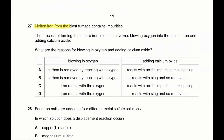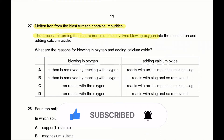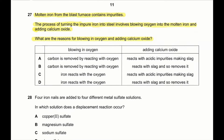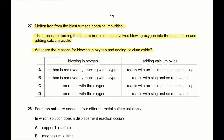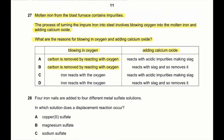Question 27: molten iron from the blast furnace contains impurities. The process of turning impure iron into steel involves blowing oxygen into the molten iron and adding calcium oxide. Blowing in oxygen removes carbon impurities by reacting carbon with oxygen. Adding calcium oxide reacts with silicon dioxide, which is an acidic impurity, forming slag. So question 27, A is the correct answer.